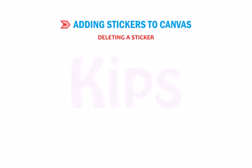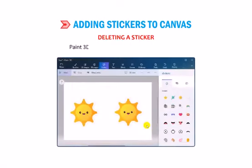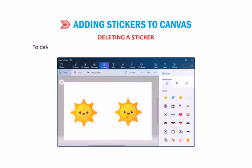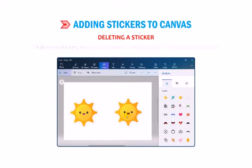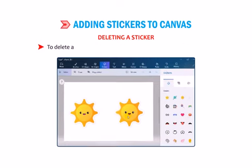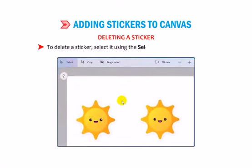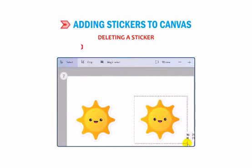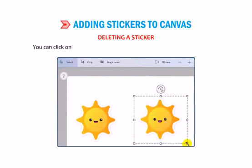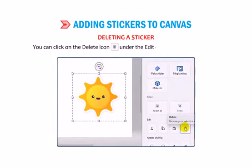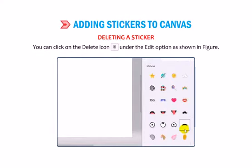Deleting a Sticker: Paint 3D provides a facility to erase a sticker. To delete a sticker, you can use the Delete option given in the Selection pane. Select the sticker using the Select tool from the top menu. Once a sticker has been selected, you can click on the Delete icon under the Edit option as shown in the figure.